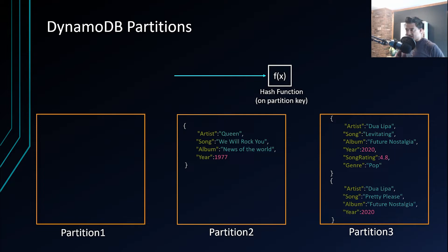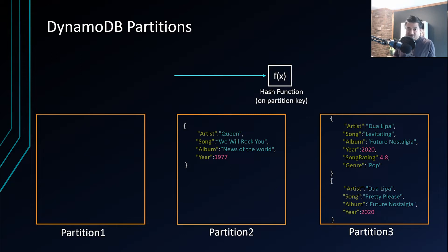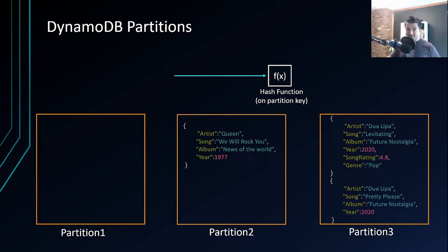If multiple items have the same partition key, DynamoDB stores all those items in the same partition, but they are stored in ascending order of the sort key. That's why the partition key is named 'partition key' — it determines the partition — and also called 'hash key' because the hash function runs on it. The sort key is named 'sort key' because items are sorted within the same partition.